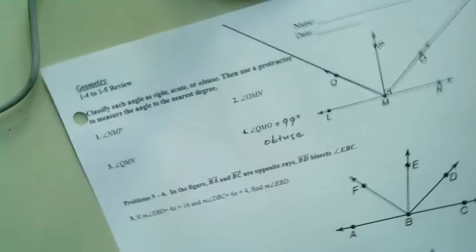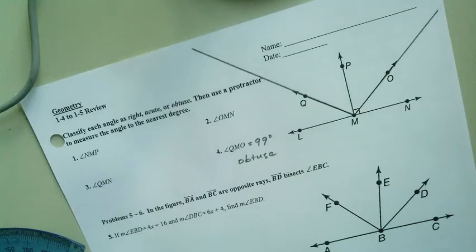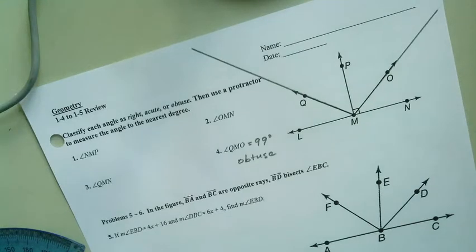And then also, obtuse is greater than 90, less than 180. Acute is less than 90, greater than zero. And right is equal to 90.